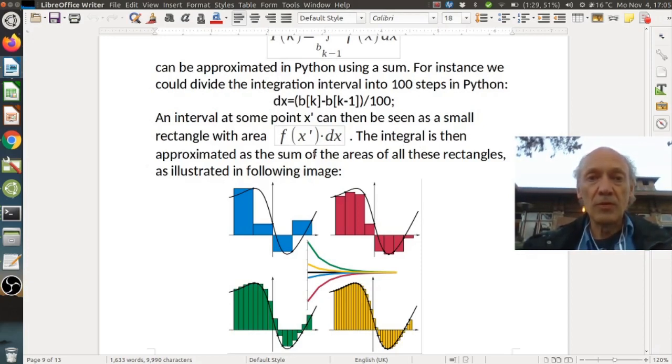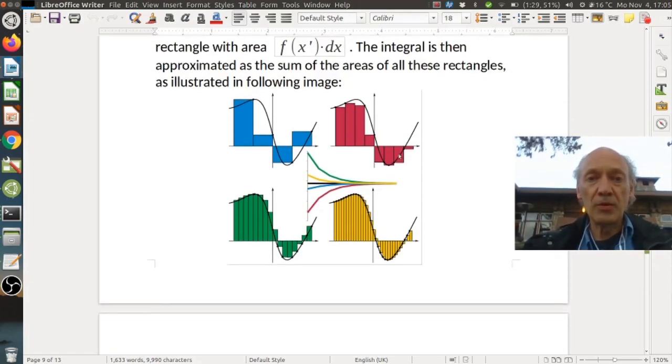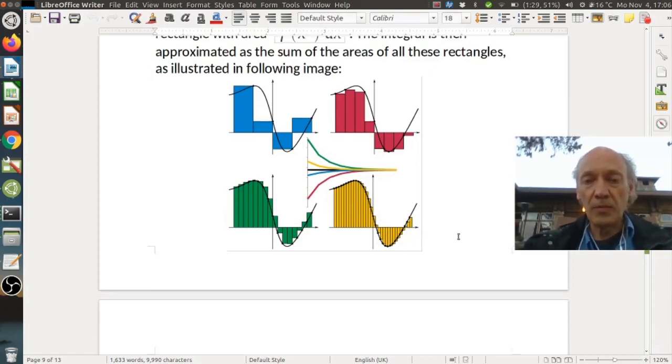This integral is then approximated as the sum of all these areas, all these rectangles, which you can see here in this picture. The black line would be the pdf. You can see the finer we choose those dx, the better is the approximation to the true integral. The last picture has the best approximation, but also the finest dx, which means we need the most summations.